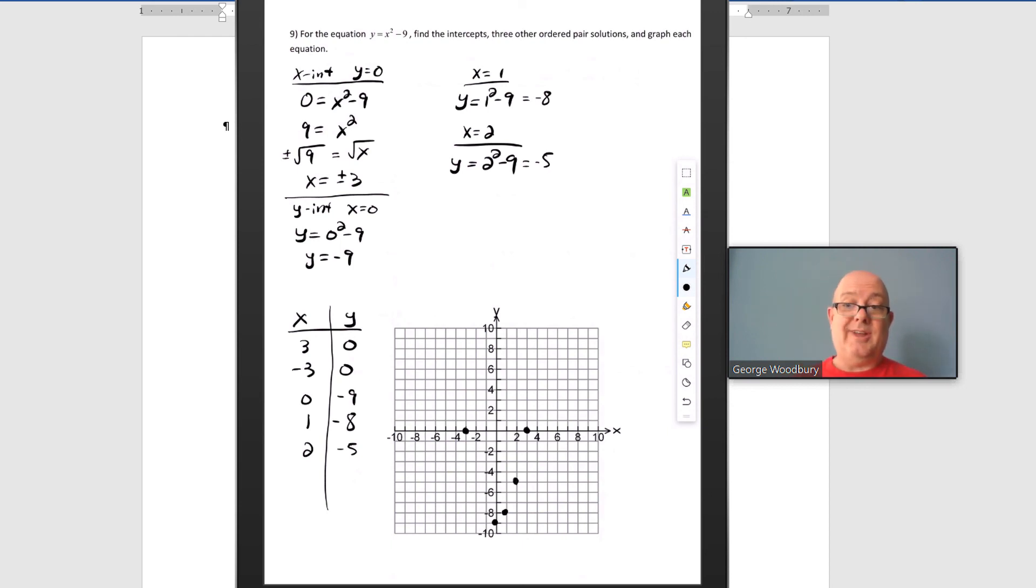Maybe some points on the left of 0 would be helpful. Let's try x equals negative 1. y equals negative 1 squared minus 9. That's 1 minus 9 again or negative 8. So negative 1, negative 8. That's all we needed was three other ones. I could have used negative 2 and got another point at negative 2, negative 5. The more points you have, the easier it is to draw. You're just following the roadmap.